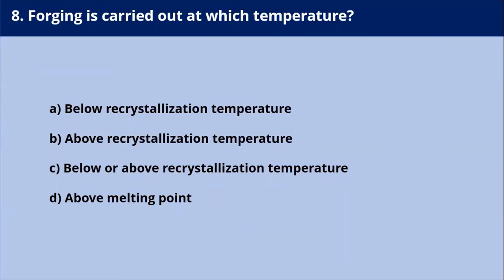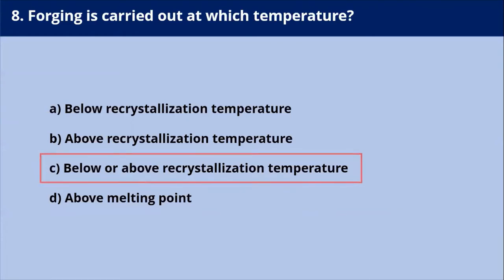Forging is carried out at which temperature? Forging is of two types: hot and cold forging. Hot forging is done by heating the metal to about 60 to 65% of its melting temperature — above the recrystallization temperature. Cold forging is generally used with soft metals and is done at room temperature — below the recrystallization temperature. So forging is carried out below or above the recrystallization temperature depending on whether it is cold or hot forging.